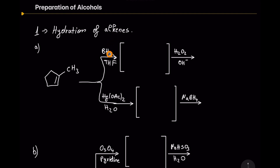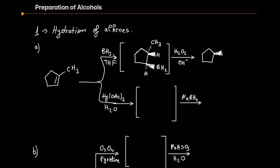Let's start with hydration of alkenes. First we had two methods: hydroboration-oxidation, which yields a non-Markovnikov product, and oxymercuration-demercuration, which yields a Markovnikov product. Hydroboration-oxidation gives a non-Markovnikov alcohol — in this case the product is trans-2-methylcyclopentanol, because the methyl is at position two.